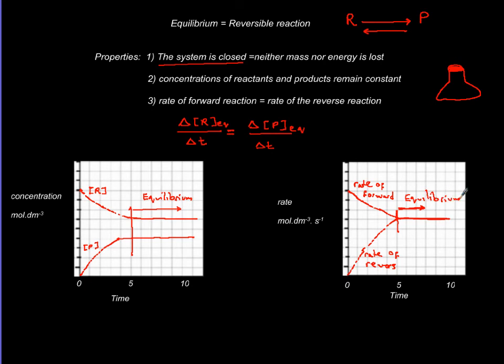In summary: the system is closed, it is a dynamic process, macroscopic properties are not changing but the reaction is constantly taking place. Concentrations of reactants and products are constant once equilibrium is reached — not necessarily equal to each other. And the rate of the forward reaction is equal to the rate of the reverse reaction. That is equilibrium.